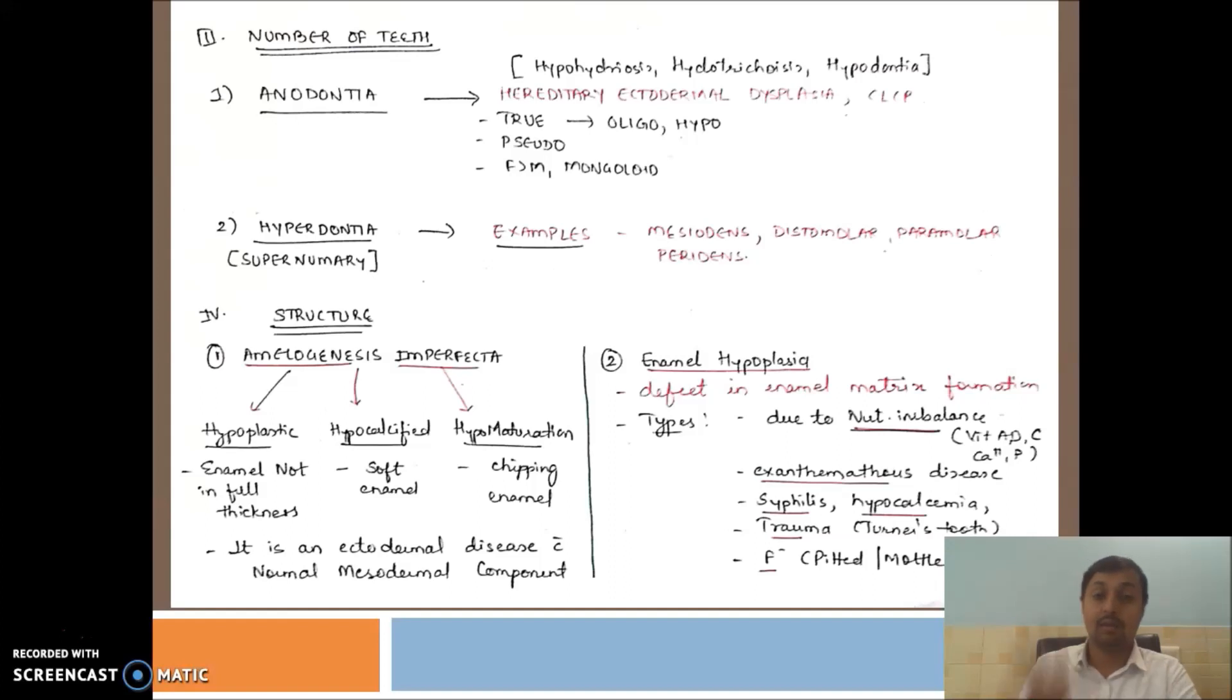What is ectodermal dysplasia? Remember, whenever ectodermal dysplasia comes, three things you have to remember. The three S: hypohydrosis, hypotrichosis, and hypodontia.